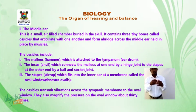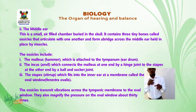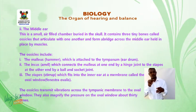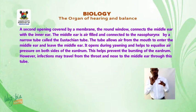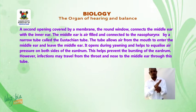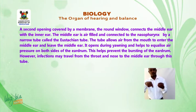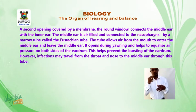The ossicles transmit vibrations across the tympanic membrane to the oval window. They also magnify the pressure on the oval window about 30 times. A second opening covered by a membrane, the round window, connects the middle ear with the inner ear.